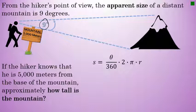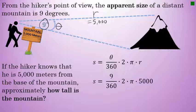As we just discussed, the formula for the arc length of a sector of a circle, which can be represented by this diagram, is theta over 360 times 2 times pi times r. In our diagram, the central angle is theta, and r is the distance from the hiker to the mountain, which we now know to be 5,000 meters. Substituting these values into the arc length formula gives us: s equals 9 degrees over 360, times 2 times pi, times 5,000 — the hiker's distance from the mountain.